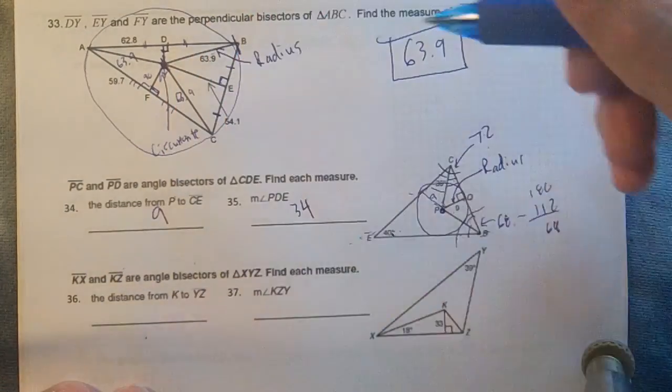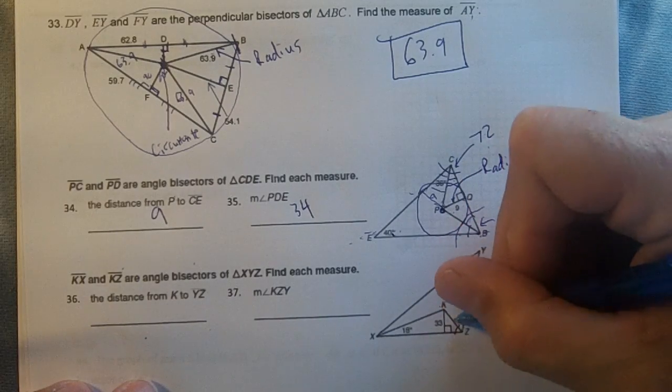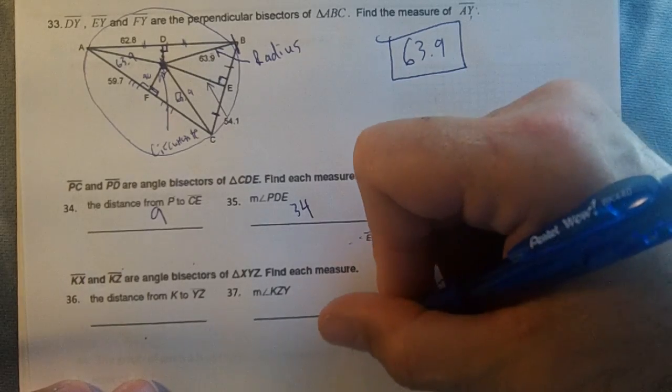KX and KZ are angle bisectors. KX and KZ are angle bisectors, that means these angles are the same and these are the same. That means this whole angle is 36.